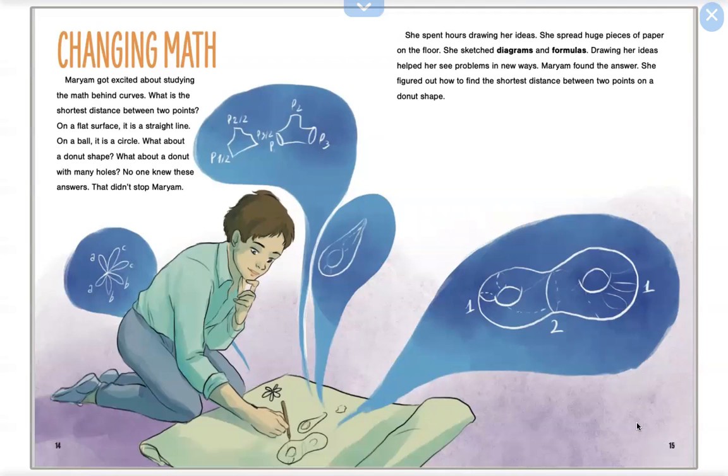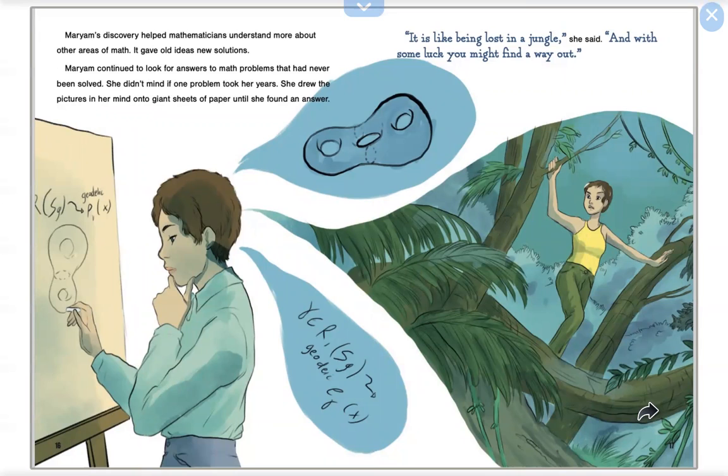She spent hours drawing her ideas. She spread huge pieces of paper on the floor. She sketched diagrams and formulas. Drawing her ideas helped her see problems in new ways. Maryam found the answer. She figured out how to find the shortest distance between two points on a donut shape.